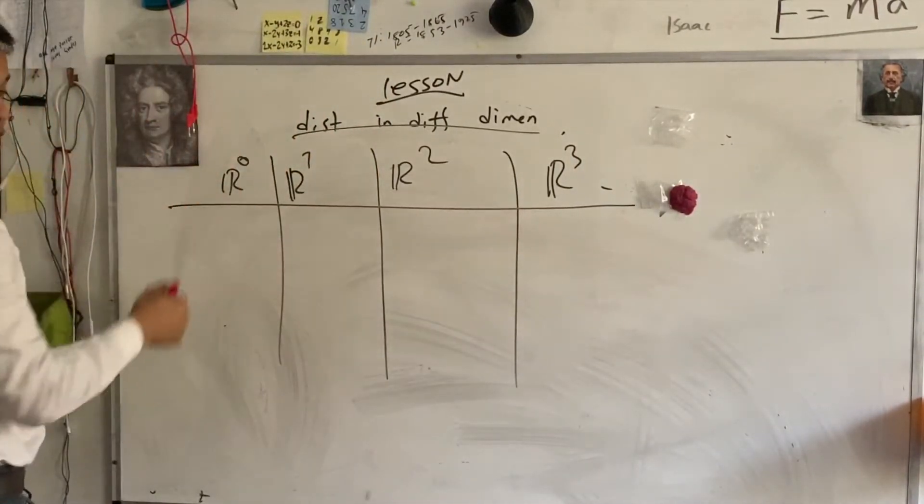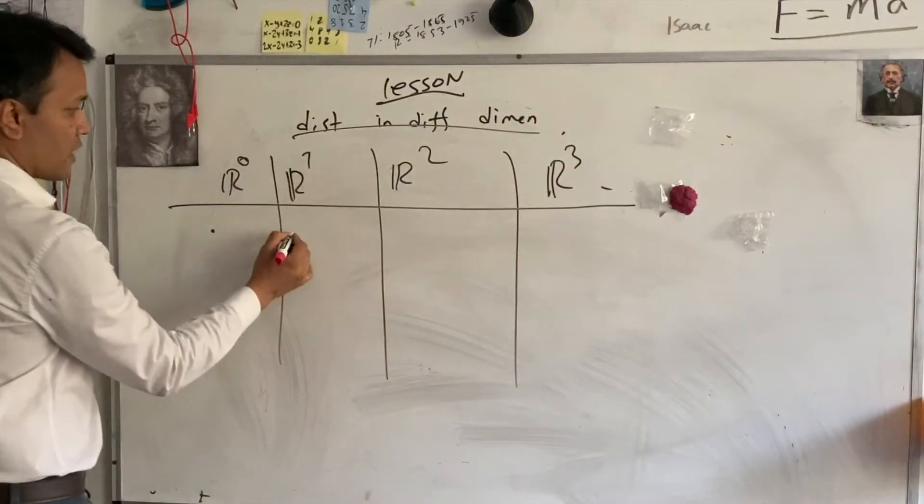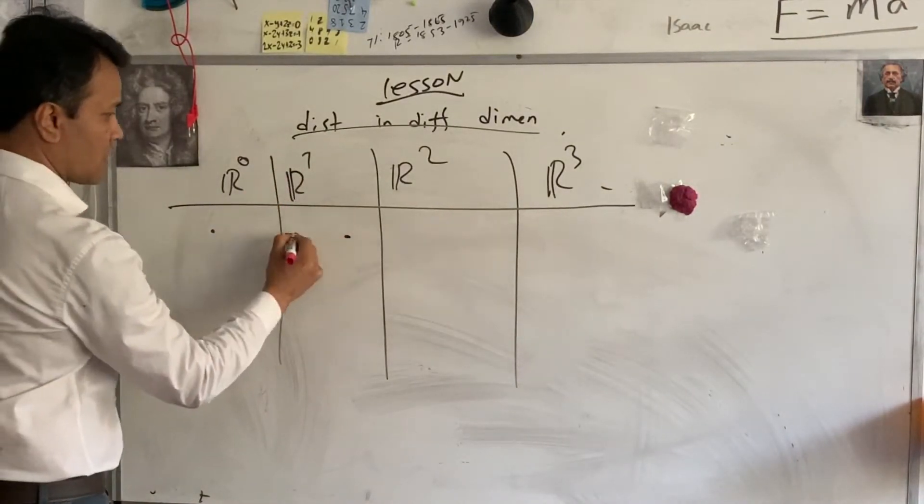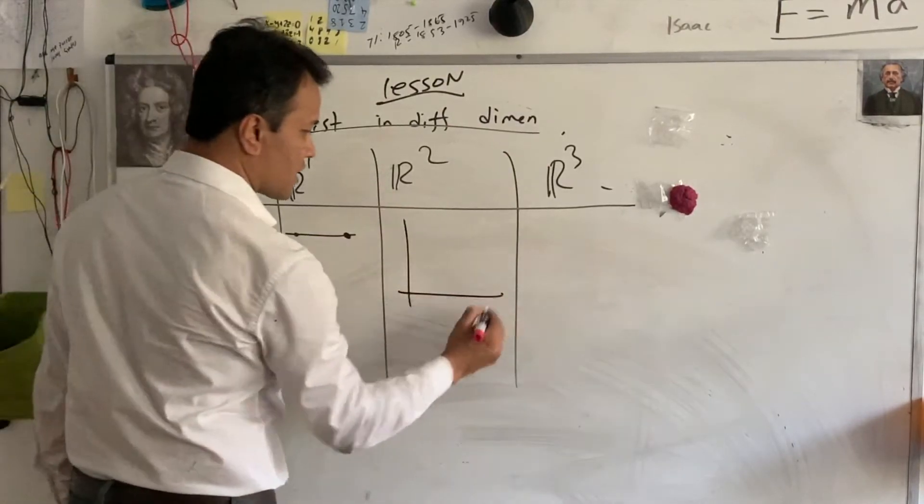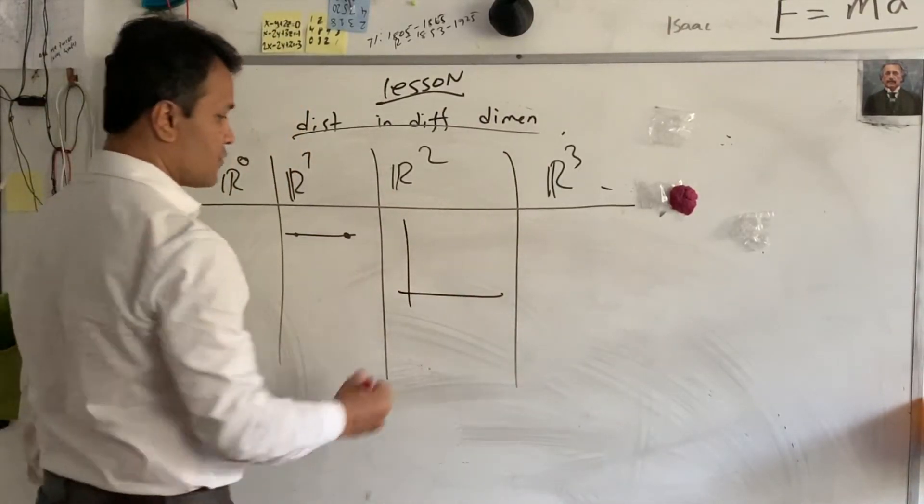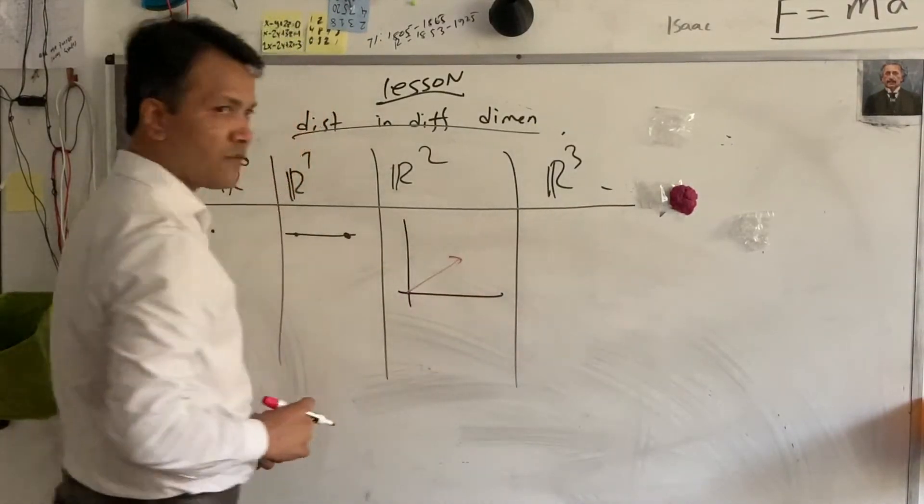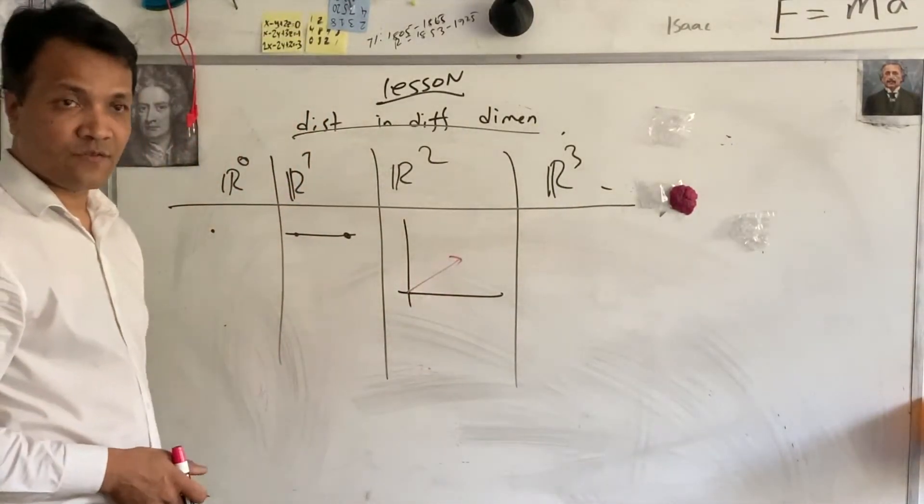When we talk about R0, we're talking about actually point. When we talk about R1, we're talking about the two point, which of course makes line. When you talk about R2, we are talking about Cartesian plane. If you put a vector on the Cartesian plane, you can find the distance of the vector.